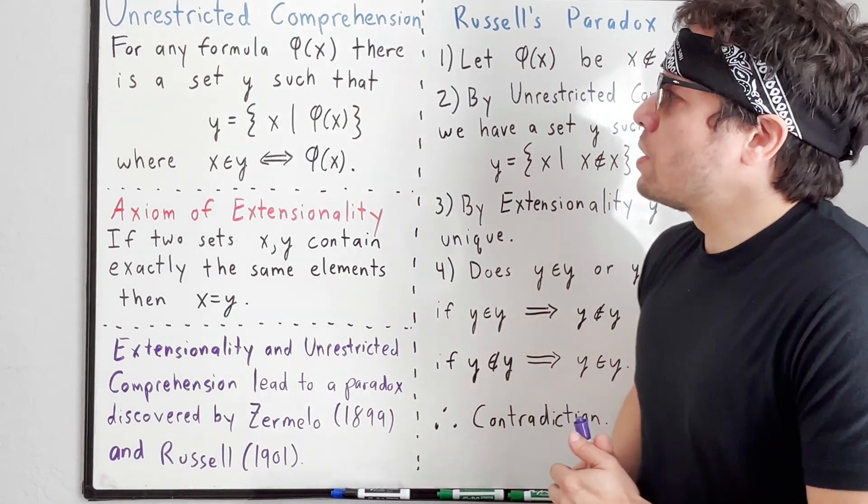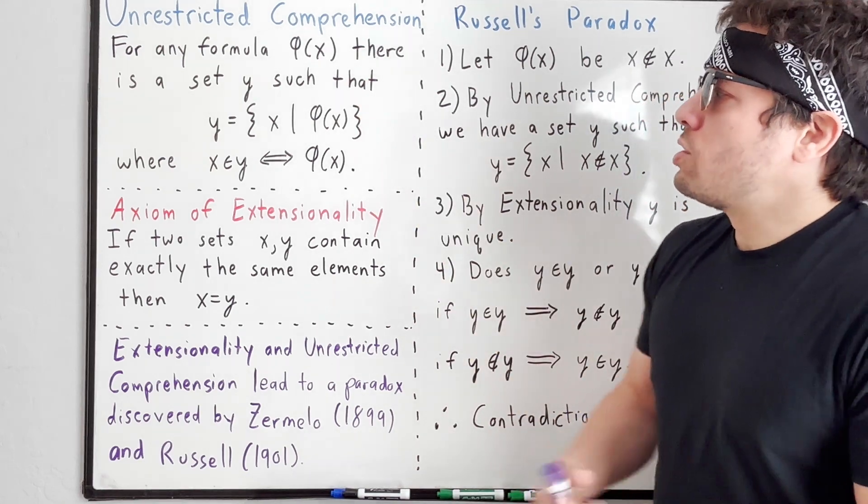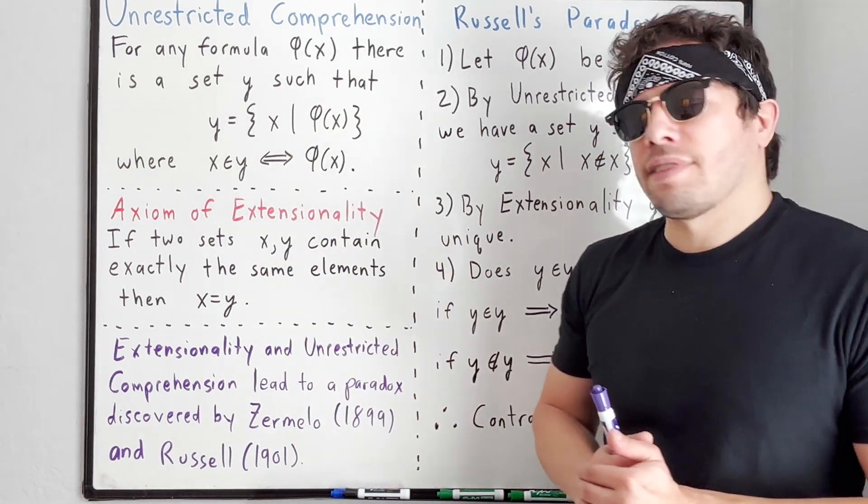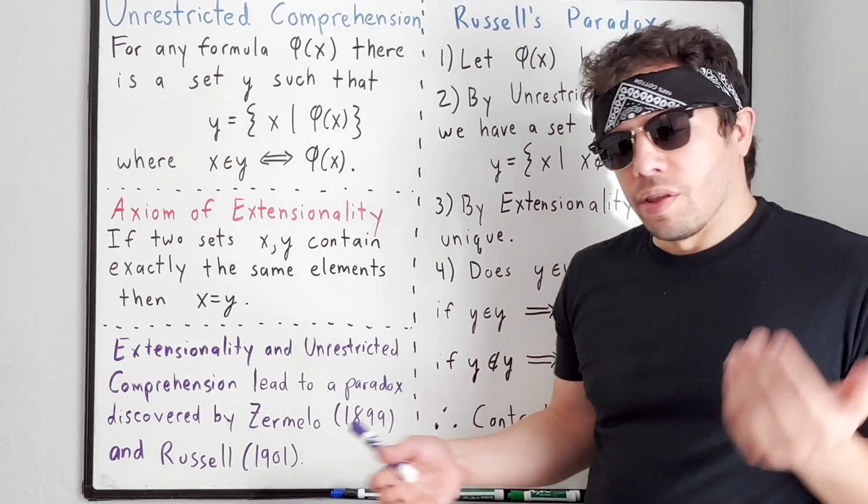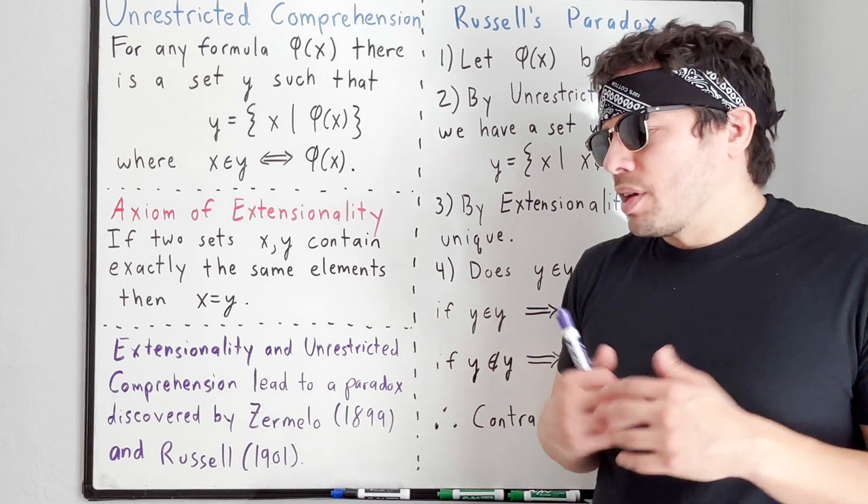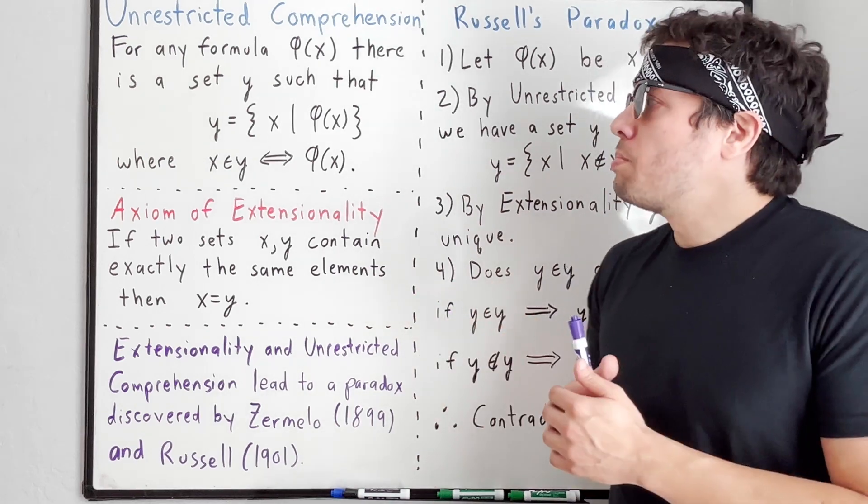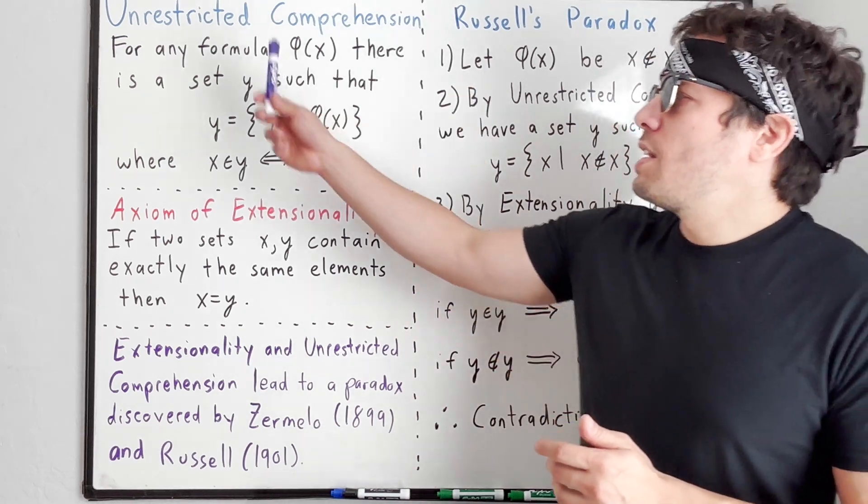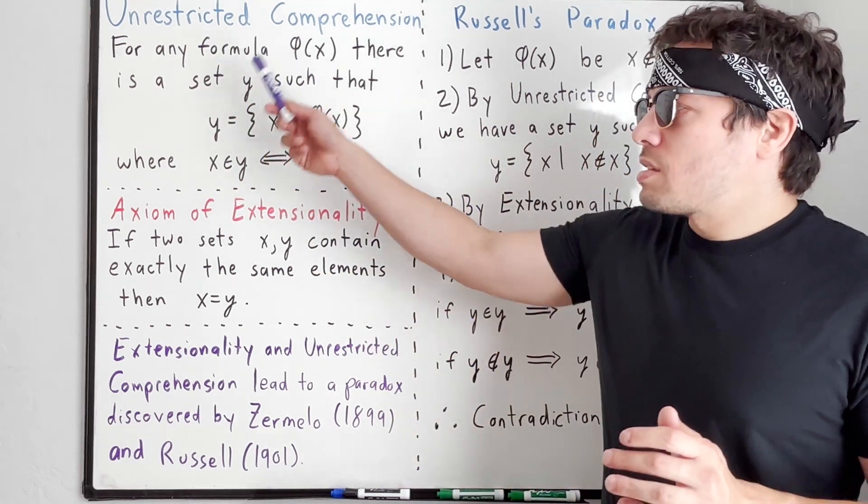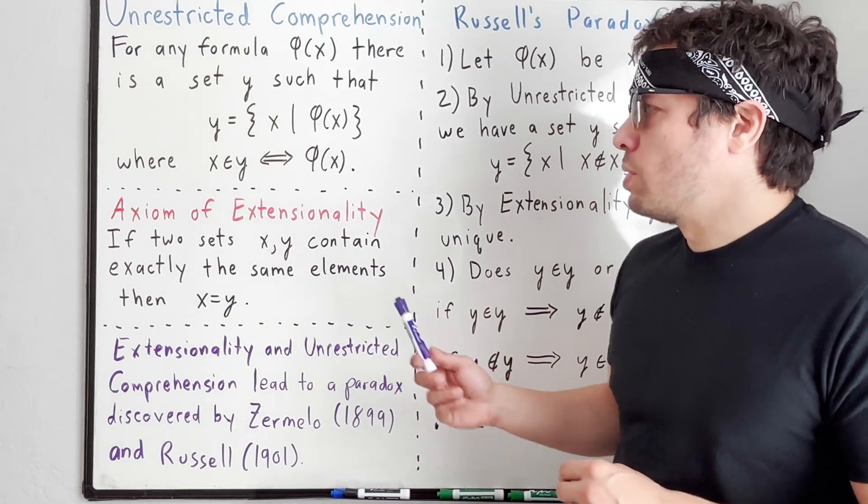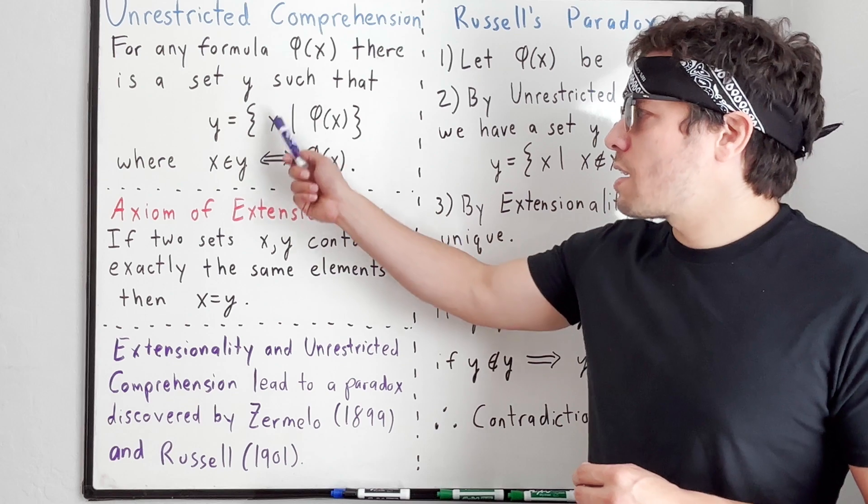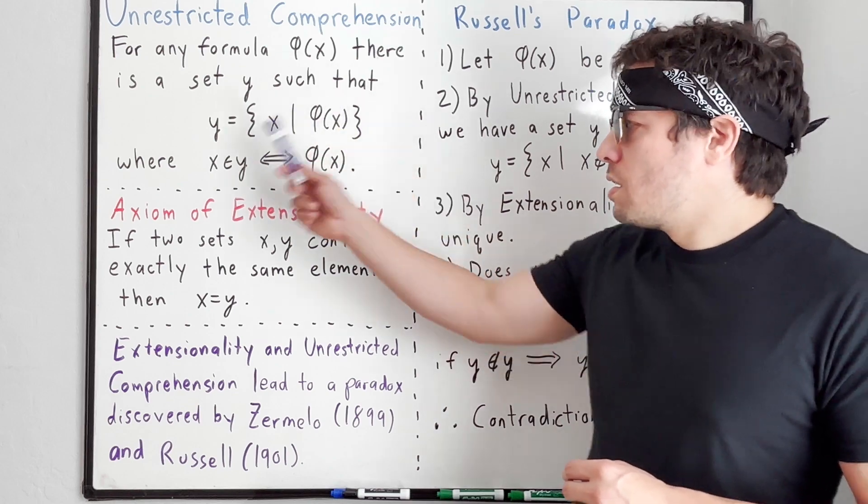We'll start off with unrestricted comprehension. Unrestricted comprehension goes back to the days of naive set theory and Frege, although to call Frege's work naive is a bit of a misnomer because Frege's work was anything but naive. But the idea is that for any formula, that's any formula φ(x), there is a set y defined by this formula. And so here we have a set y defined as x such that φ(x).